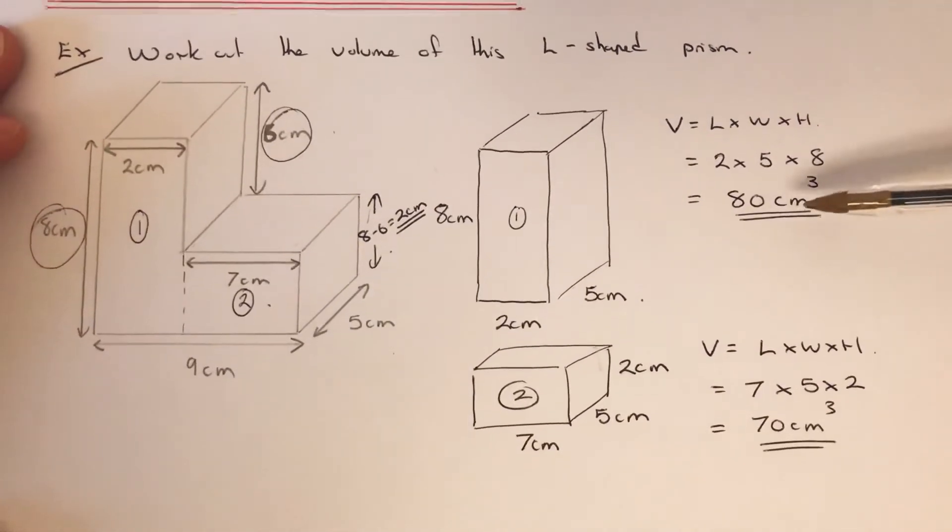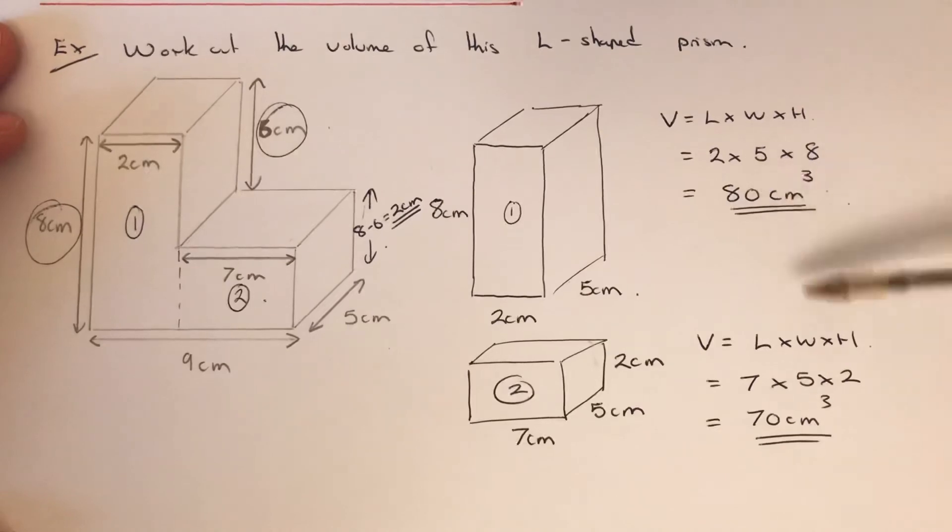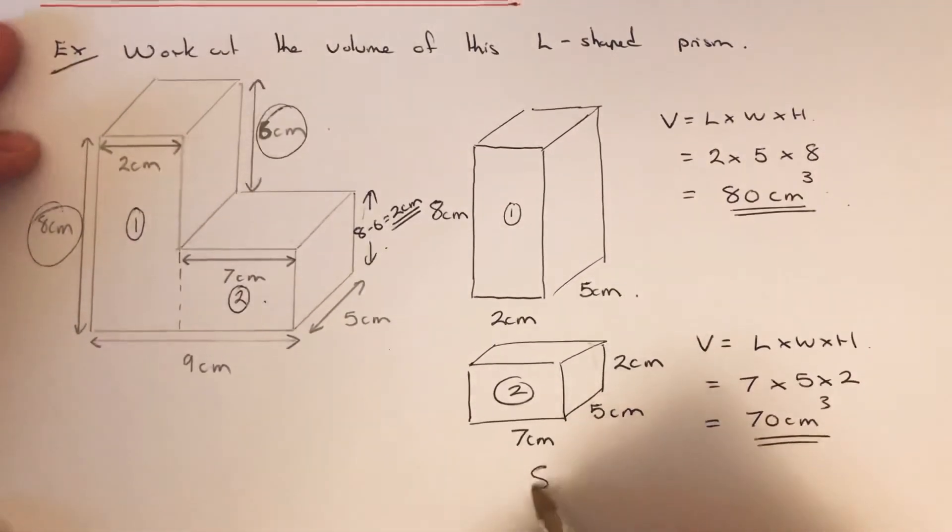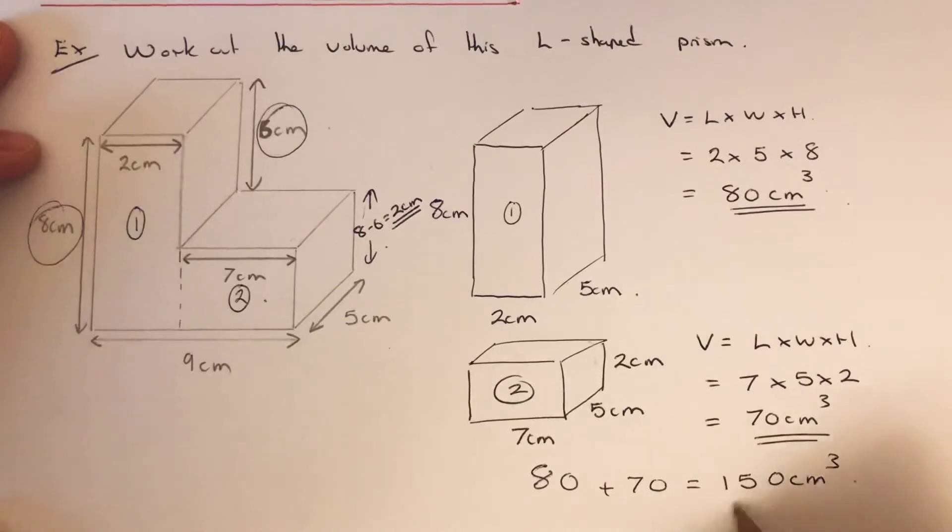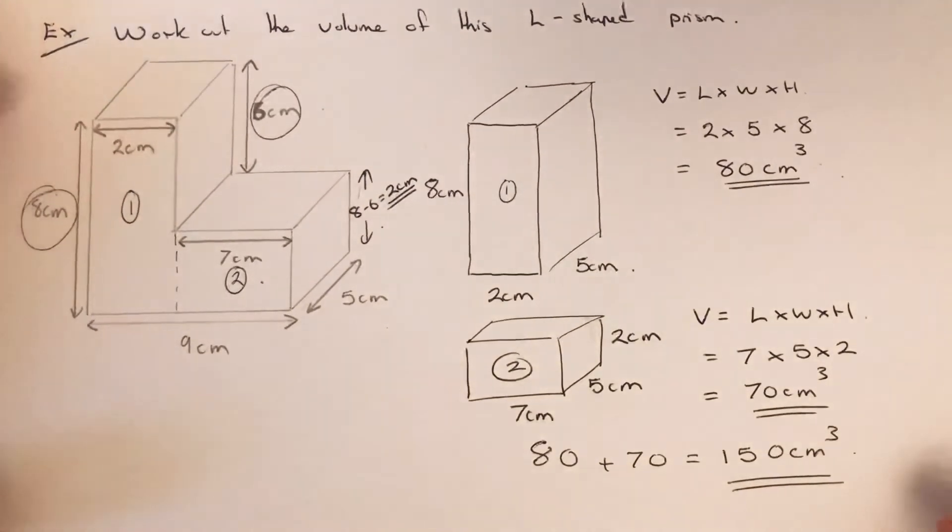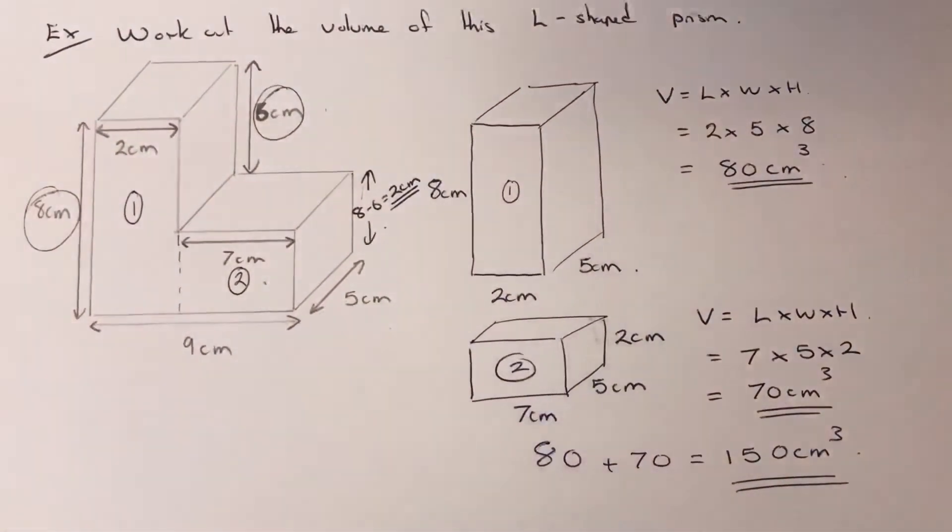That is the volume of our second cuboid. To get the volume of the L-shape we just need to add these two answers up. So 80 and 70 is 150 centimeters cubed, and that's your final answer.